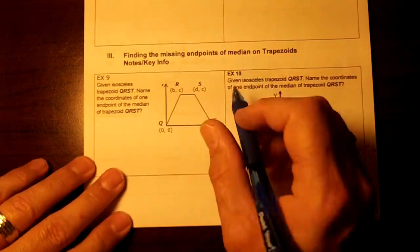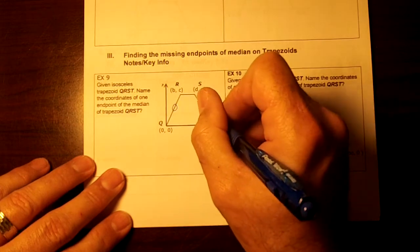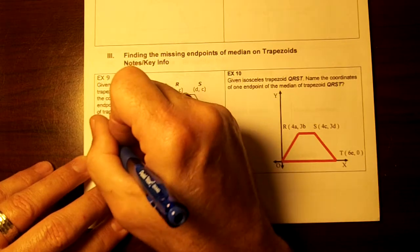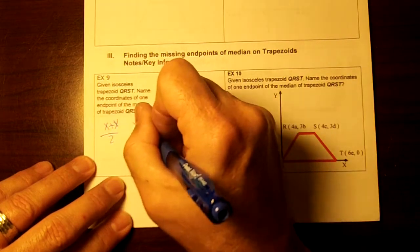Okay, finding the missing endpoints on medians. The median goes from here to here. And to get your midpoint, you do x plus x divided by 2 and y plus y divided by 2. This is kind of funky because you got letters in for your ordered pairs.